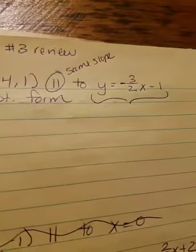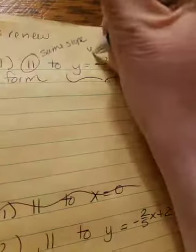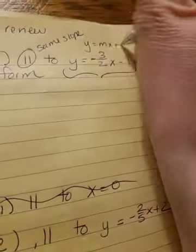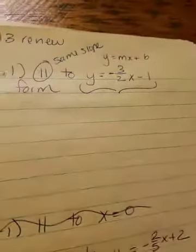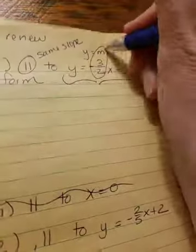remember that means we need to have the same slope. So, look at the line that they gave you. What's the slope of that line? The slope is negative 3 halves, because it's in y equals mx plus b form, which is slope intercept form, and the slope is the number in front of x.